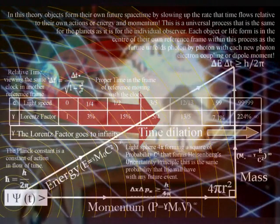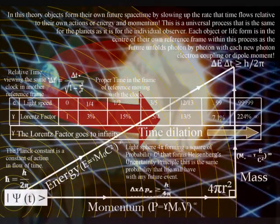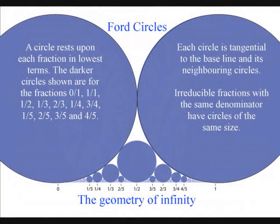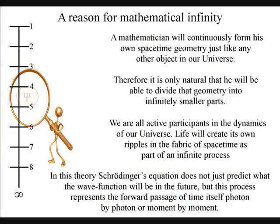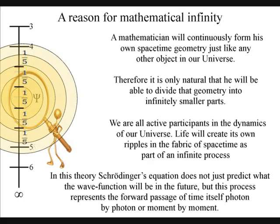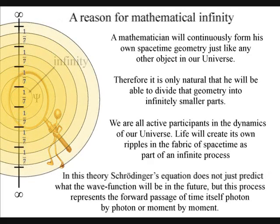This theory can explain the paradoxes of infinity because we have a process of continuous creation that we see and feel as time, but as the geometry of space-time. A mathematician will interact with this universal process, continuously forming his or her own space-time geometry. Therefore, it is only logical that he will be able to divide that geometry into infinitely smaller parts as time unfolds.